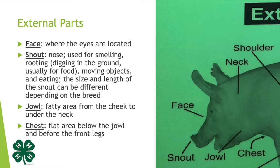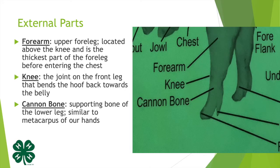The jowl is the fatty area from the neck to under the neck, and the chest is the flat area below the jowl and before the front legs. Moving down from the face we have the forearm — this is the upper part of the front legs located above the knee and is the thickest part of the foreleg before entering the chest.